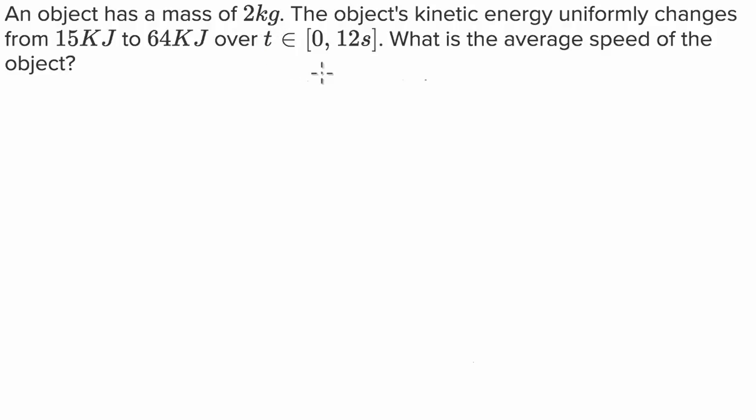An object has a mass of 2 kilos. The object's kinetic energy uniformly changes from 15 kilojoules to 64 kilojoules over this time period. So basically if you don't know what this means, this just means from the time 0 to 12 seconds. What is the average speed of the object?